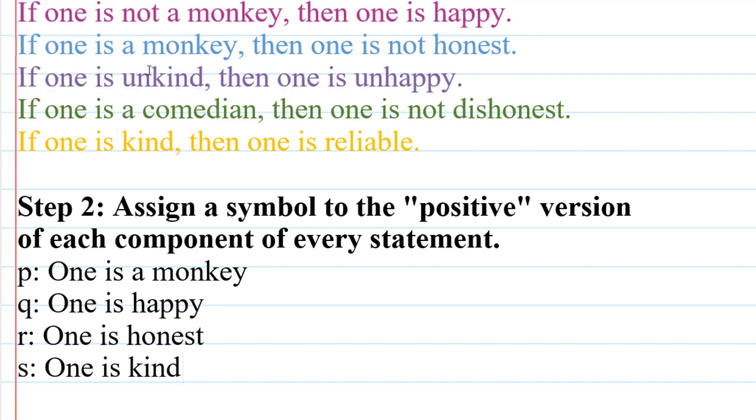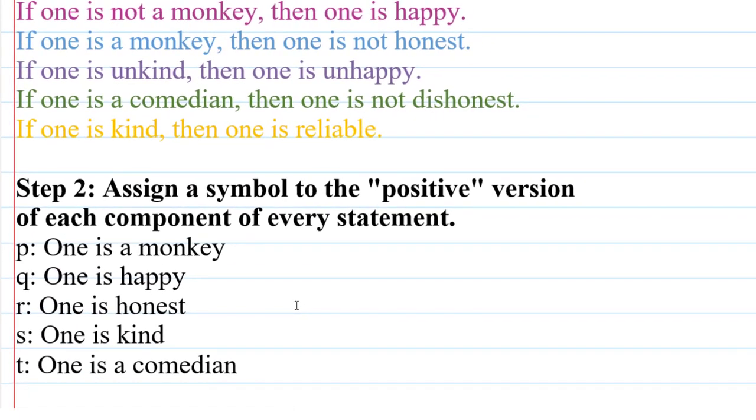Next we're going to look at if one is a comedian, then one is not dishonest. So I'm going to need a letter to represent one is a comedian, that'll be T, but I already have a letter for one is honest, so I don't need something for not dishonest, which just means honest. And then finally, if one is kind, then one is reliable. I already have one is kind, but I don't have anything about being reliable, so that will be U.